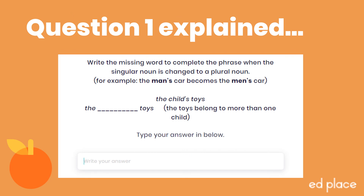Let's go through some of the questions now. Question 1 asks you to write the missing word to complete the phrase when the singular noun is changed to a plural noun — for example, 'the man's car' becomes 'the men's car'. You need to do the same for 'the child's toys', making 'child' plural. Child becomes 'children', which is an irregular noun, so we need to add an apostrophe and an S. The answer is 'the children's toys' — just write 'children's' in the answer box.